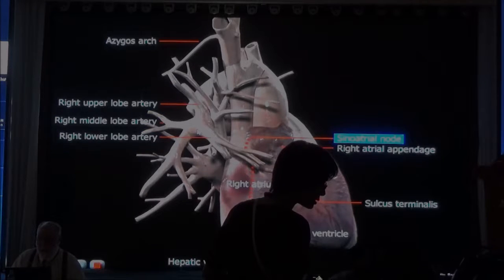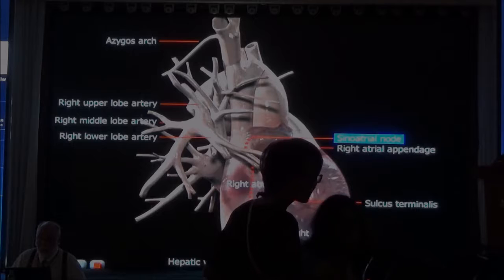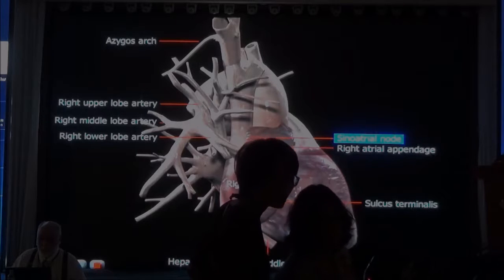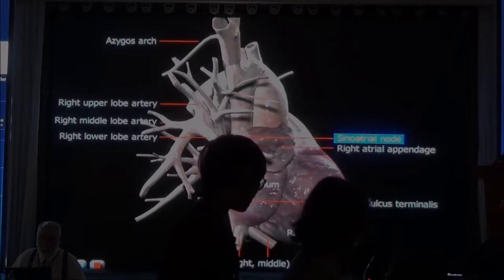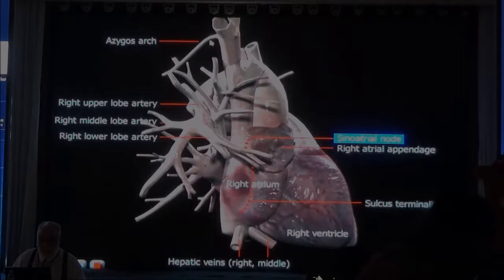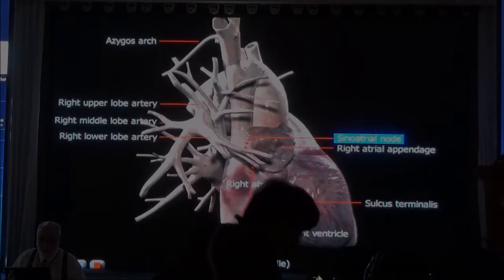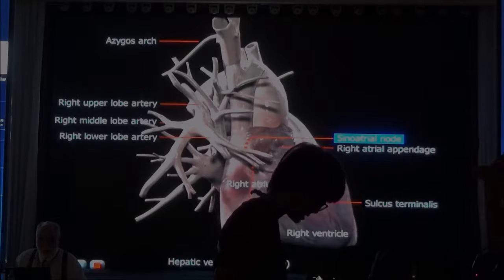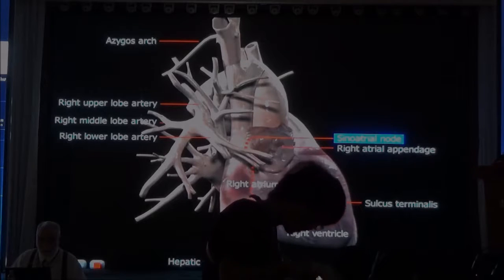Now, behind the superior vena cava here, we have the azygous arch. In my model here, the azygous arch is a bit thinner, and the actual vein is bigger than that.